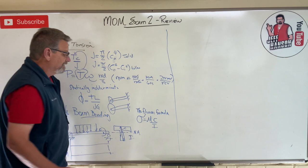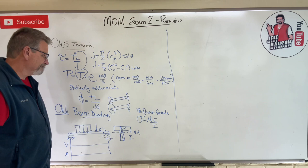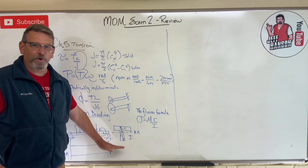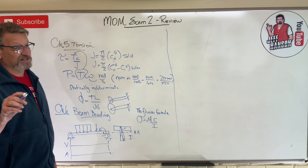So then I would use this value here for C, and then I have to calculate I, one-twelfth bh cubed special there. So I could ask you, I could give you one beam, and I could ask you a lot of questions about that beam from this chapter.